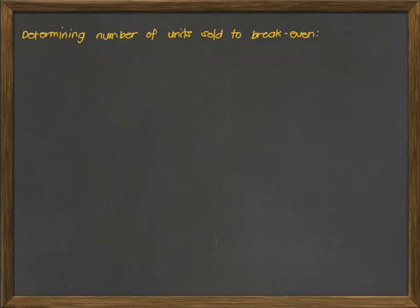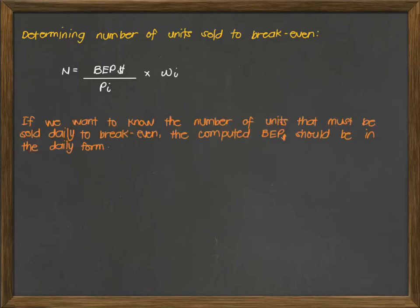Now, we want to determine the number of units sold to break-even. So we use the following formula. For each item, we use the break-even point in dollars divided by the price per item, and you multiply by the weight per item. Now, if you want to know the number of units that must be sold daily to break-even, the computed break-even point in dollars should be in the daily form. Again, if you want to know the number of units to break-even per day, your break-even point in dollars should be converted on a daily basis.